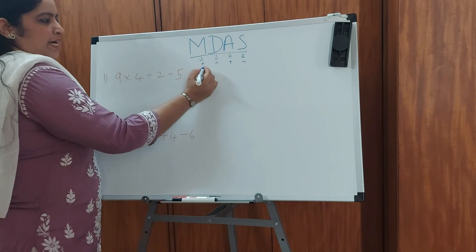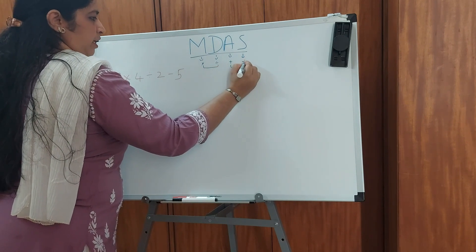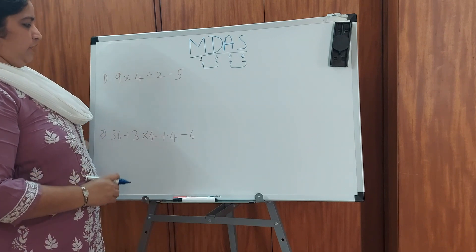As you could see, multiplication and division go together and addition and subtraction go together. Let's do this with a question so that you get a clear understanding of this concept.